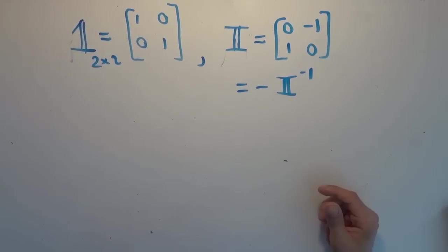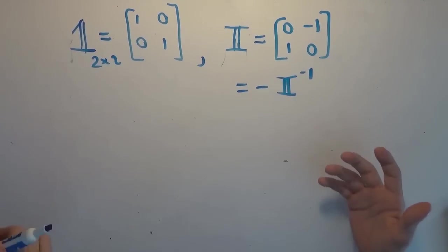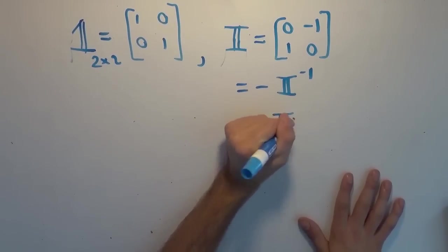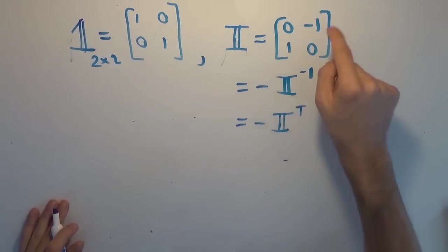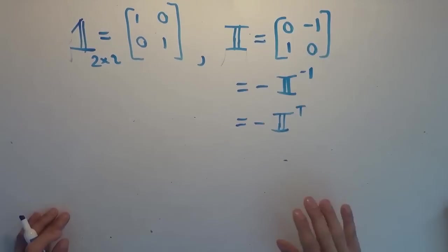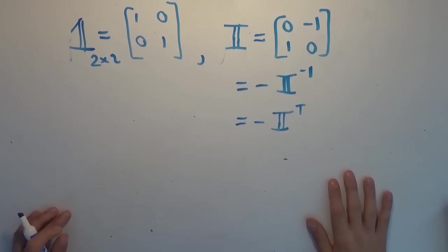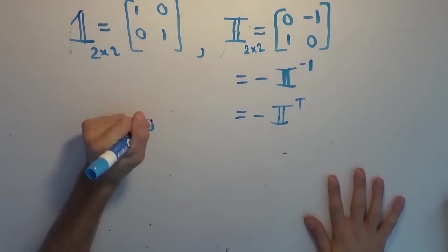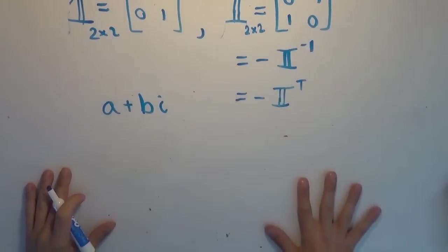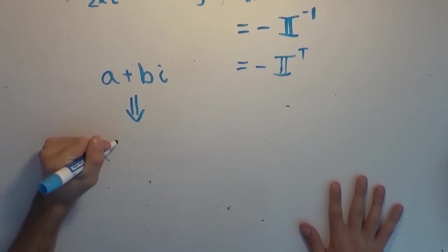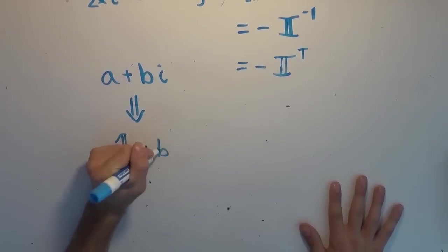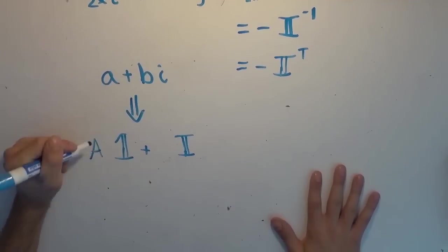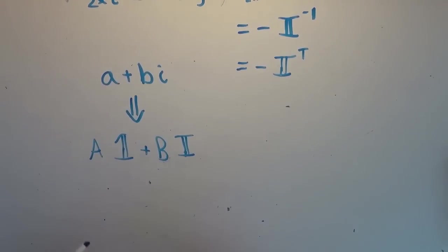This imaginary matrix equals the negative of its inverse, which makes sense recalling that 1/i = -i. It's also equal to the negative of its transpose: transposing gives [0, 1; -1, 0], which is the negative of the original. The transpose reflects the matrix about its main diagonal. So those are our three key facts about the two-by-two representations. A complex number A + Bi is represented as A times the identity matrix plus B times the imaginary matrix.